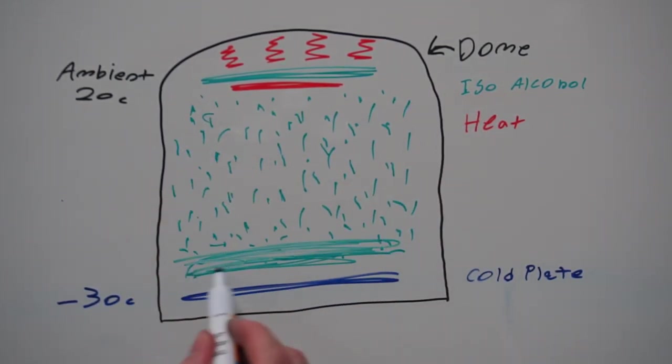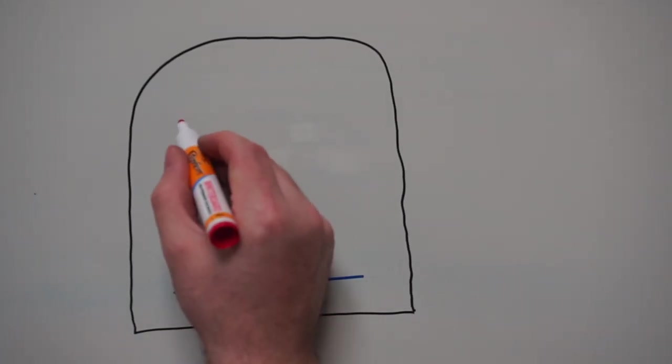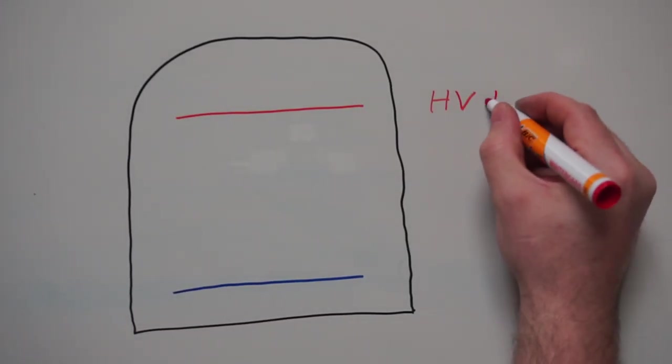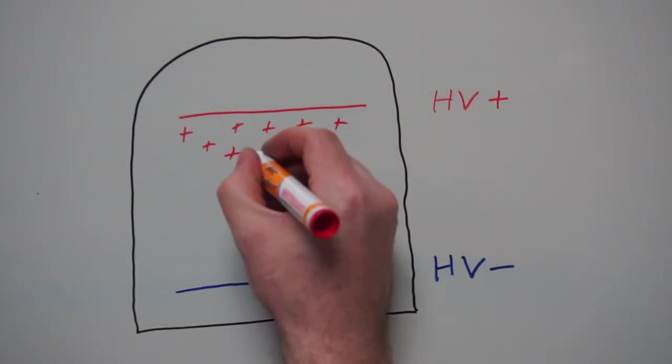Another key component is producing a high voltage electric field inside the chamber. This is what it looks like with the high voltage turned off. And now on, the difference is literally day and night. The cold plate is negative and suspended above the cold plate is a mesh ring that is positive. This produces an electric field and charges the air.